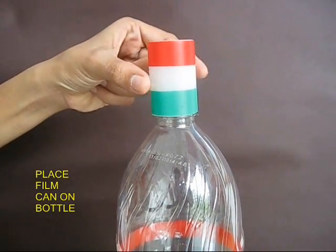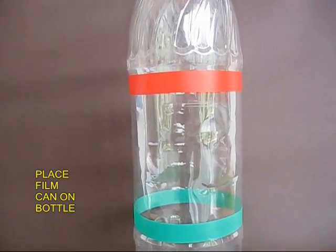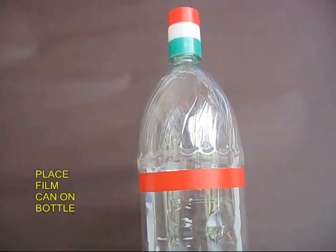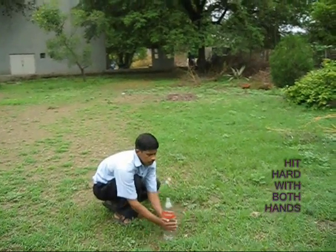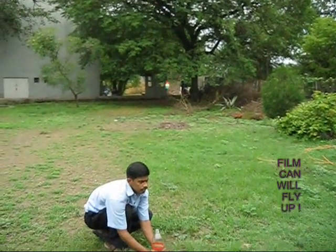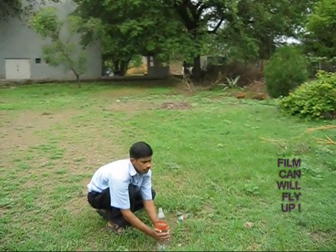And place the can on top of the mouth of the bottle. And your toy is almost ready. Now with both your palms, you hit hard the bottle and the film can just jumps up.